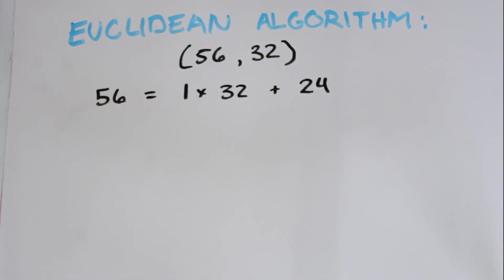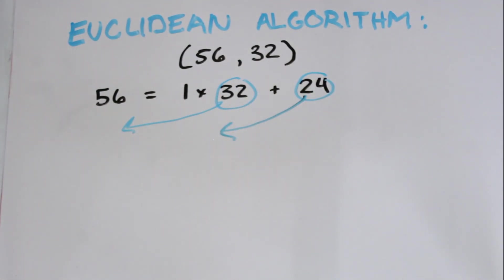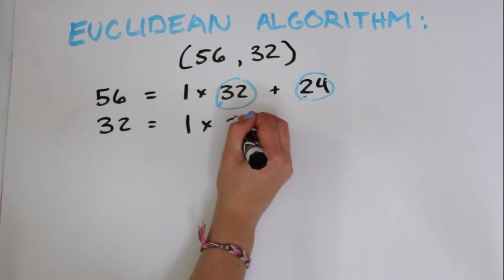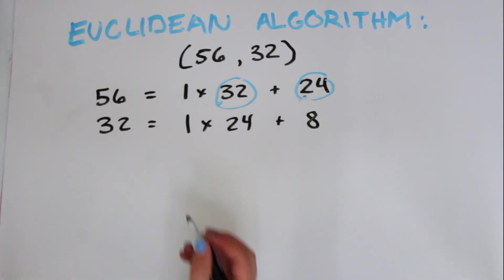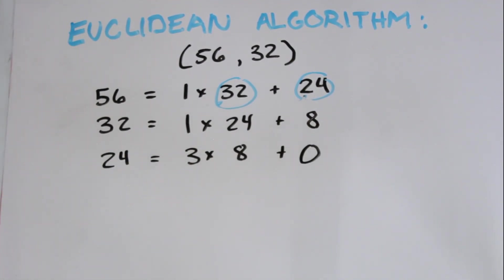Now 32 is the B and 24 is the R, so we do the same thing on those two numbers. 32 = 1 × 24 + 8. And then we can do the same thing again and write 24 = 3 × 8 + 0. Now this 0 tells us that 8 divides 24. So that means that the greatest common divisor of 24 and 8 is 8.